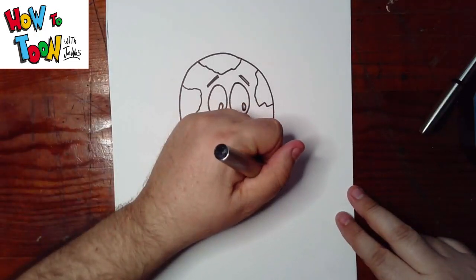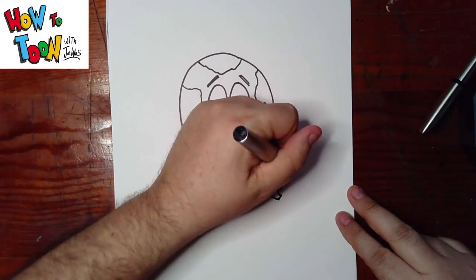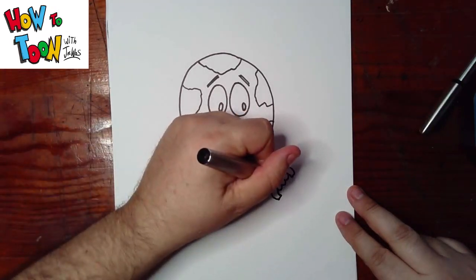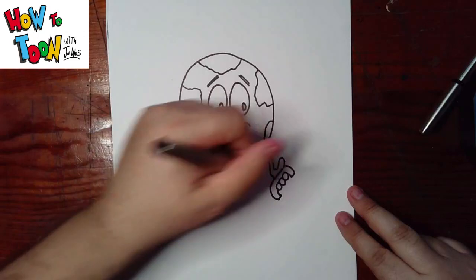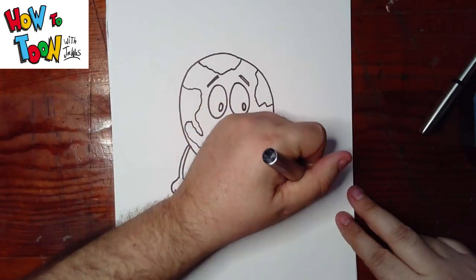Now for the watering can, a line down, curve in, over, and up, around, curve, and in. And then just connect right there. Up, around, and back.